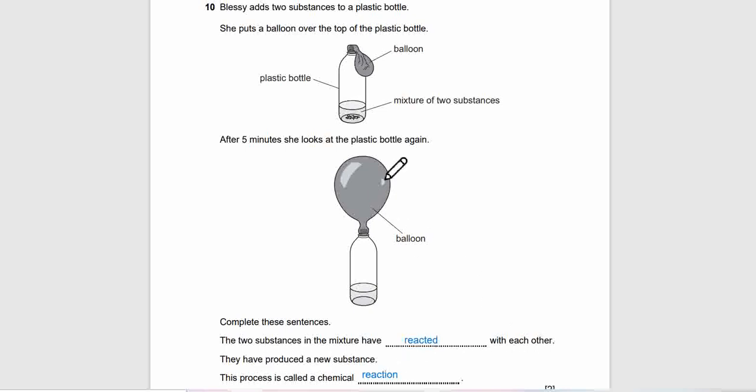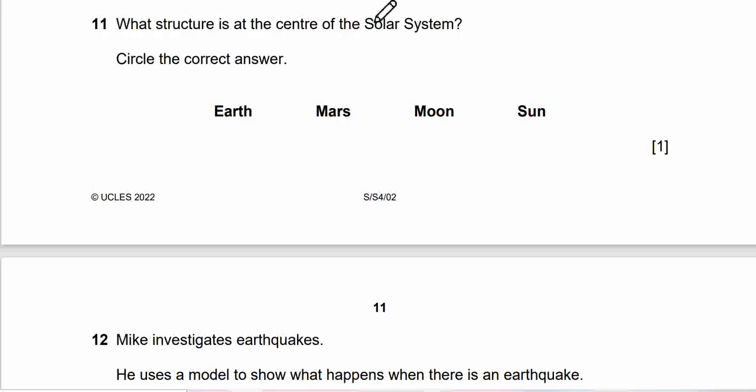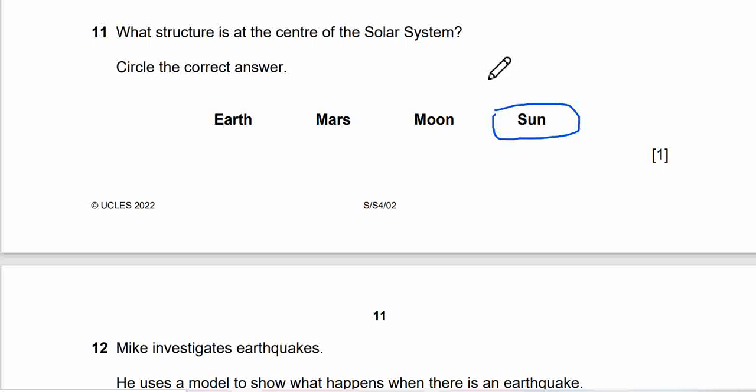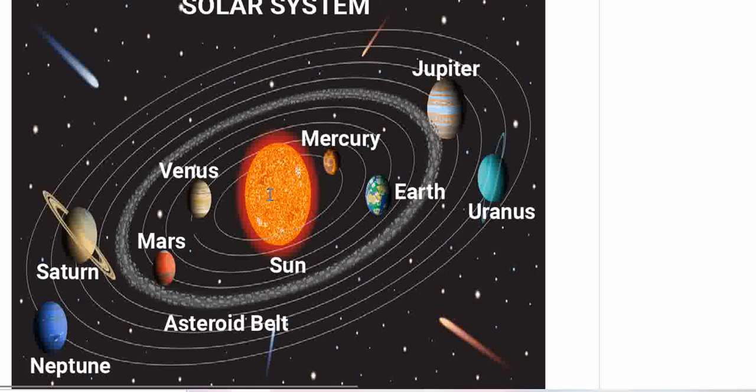What is our solar system? This is the sun at the center of the solar system. Question 11: What structure is at the center of the solar system? Circle the right answer. The answer is the sun. The sun is at the center of the solar system. Where is our solar system? This is the sun at the center, so I hope you'll never forget this.